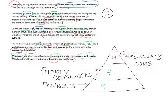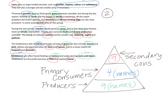So the correct energy pyramid for this food web has three levels: producers, primary consumers, and secondary consumers. It has nine producers, four primary consumers, and nine secondary consumers. And if you do this correctly, you would write the names of each organism in the pyramid — the names of the nine producers, the four primary consumers, and the nine secondary consumers. That's what the completed energy pyramid looks like.